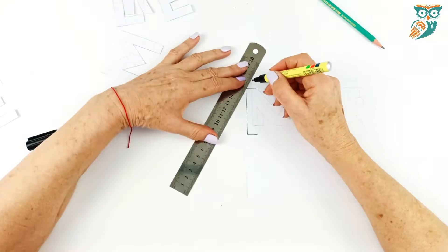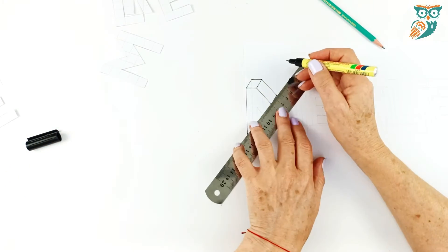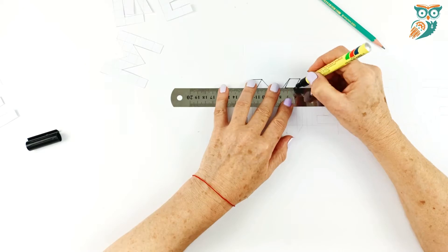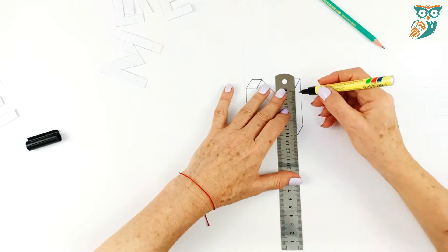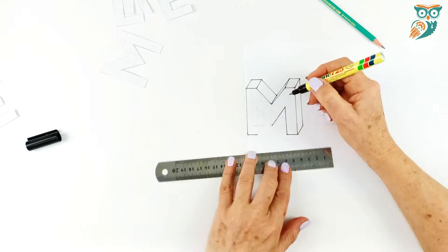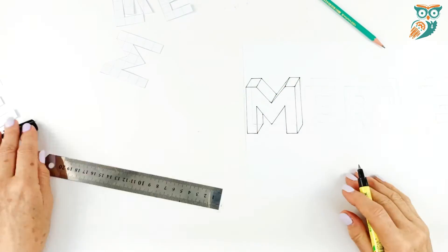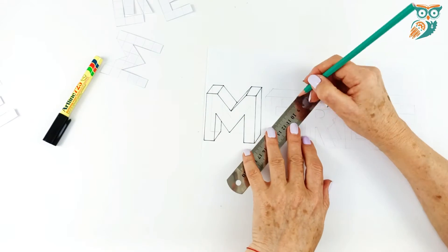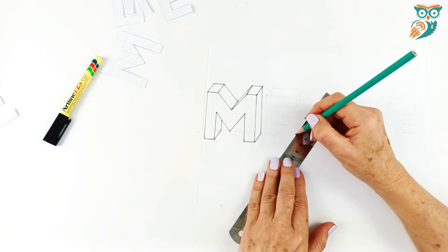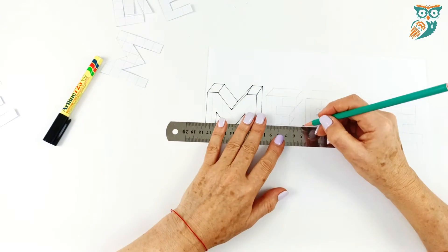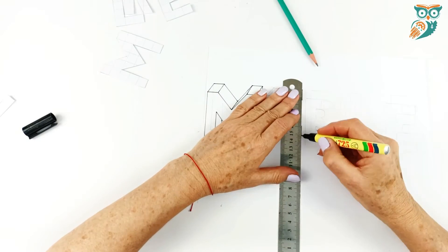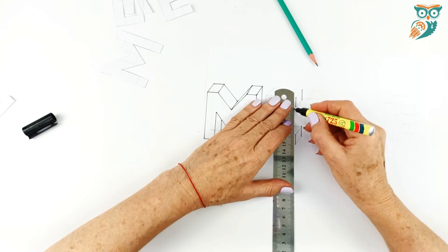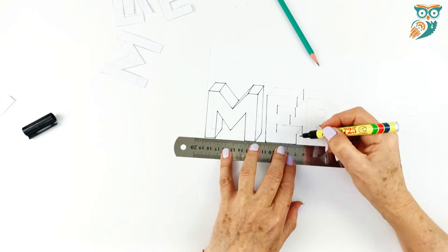And then we're grabbing a permanent marker and tracing the outside. The permanent marker is really great because it doesn't blend with the colored markers if you want to go in and color your letters afterwards. So it makes for a nice clean sharp edge. We're just going to continue on and do the rest of the letters in our name here.